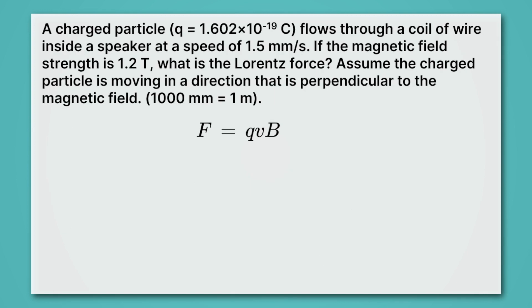All right, now it's your turn to give it a try. This problem says a charged particle, and again, it gives us the charge, flows through a coil of wire inside a speaker at a speed of 1.5 millimeters per second. If the magnetic field strength is 1.2 Tesla, what is the Lorentz force? Assume the charged particle is moving in a direction that is perpendicular to the magnetic field. Okay, good, so it's at a right angle. Now, I want you to try to calculate this force. The one thing to keep in mind here is that the speed is given in millimeters per second, and we're going to need to convert that to meters per second. All right, pause the video and give this a try.